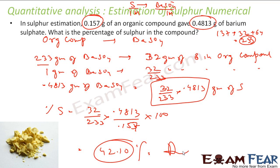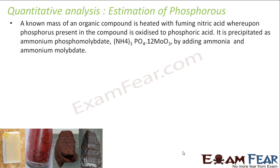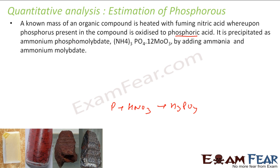Similar to sulfur, we can do quantitative estimation of phosphorus. We take some organic compound of known mass, heat it with nitric acid, and obtain phosphoric acid (H₃PO₄). Let me write the reaction: phosphorus heated with nitric acid gives H₃PO₄.